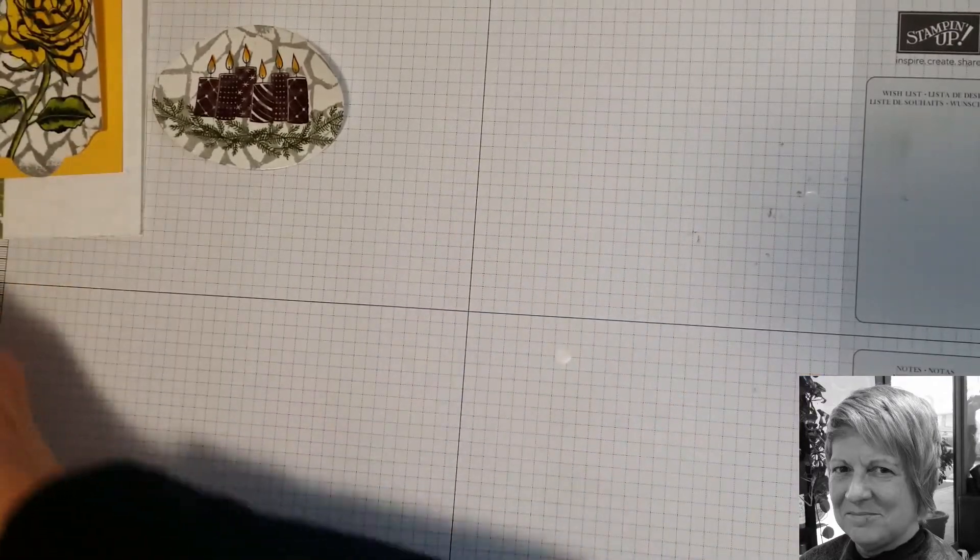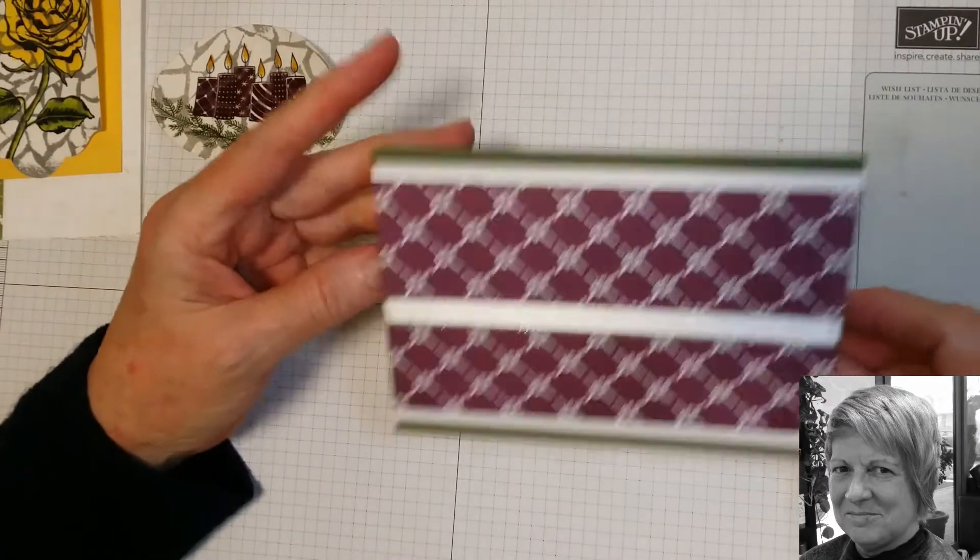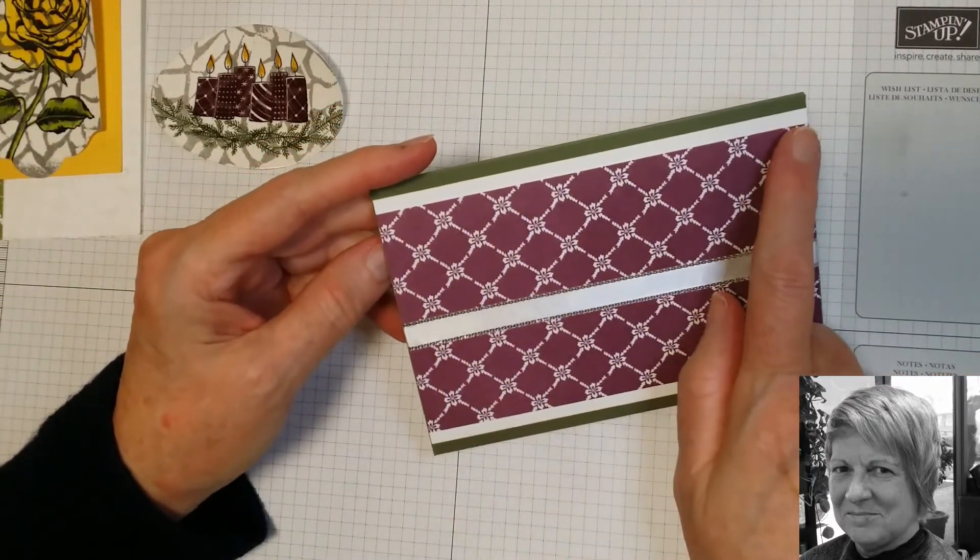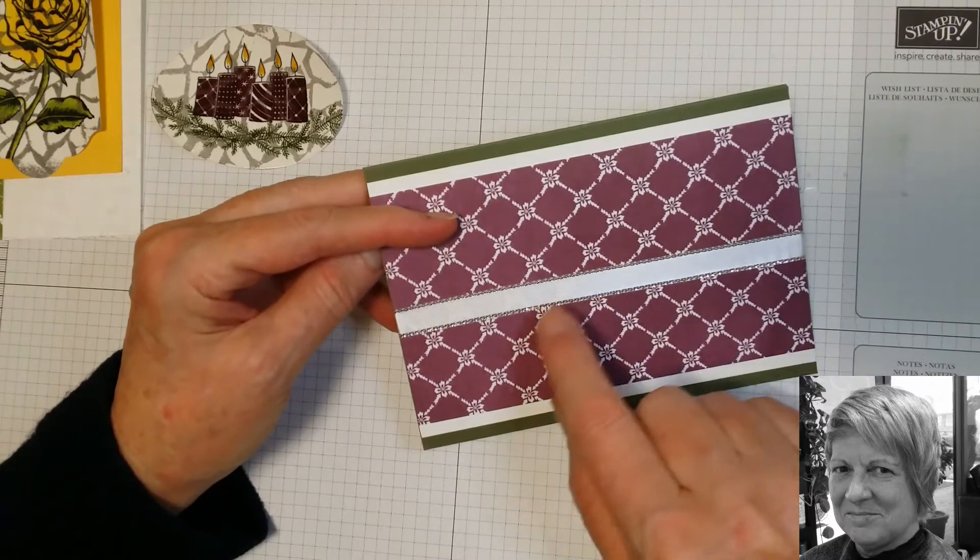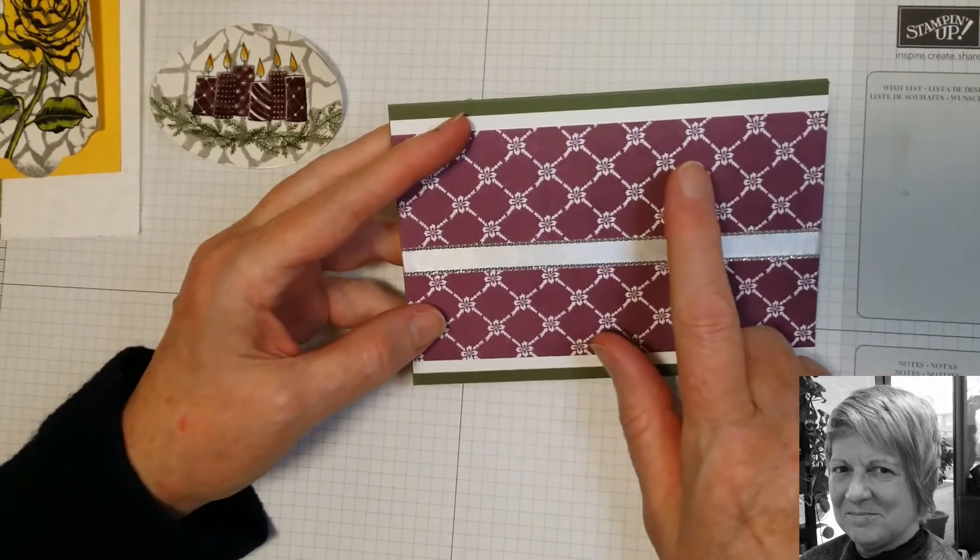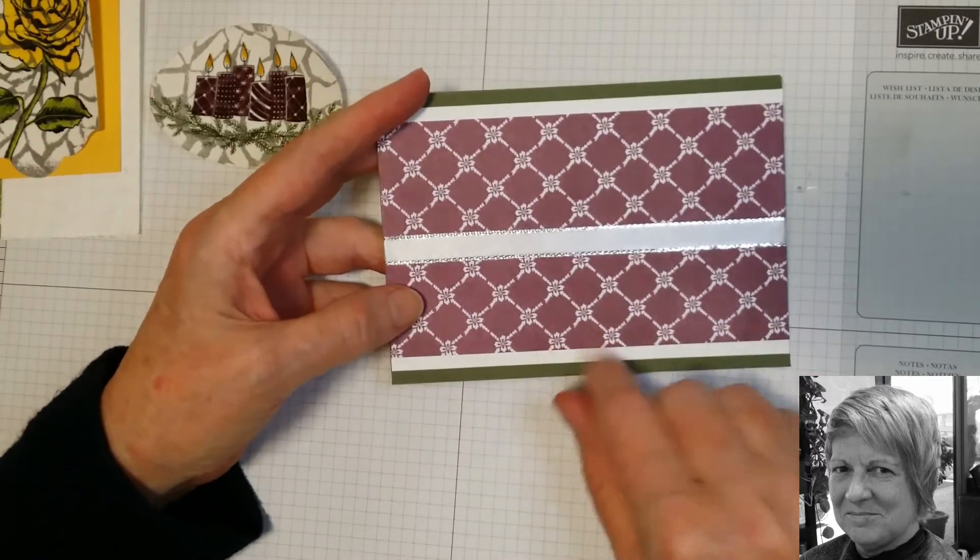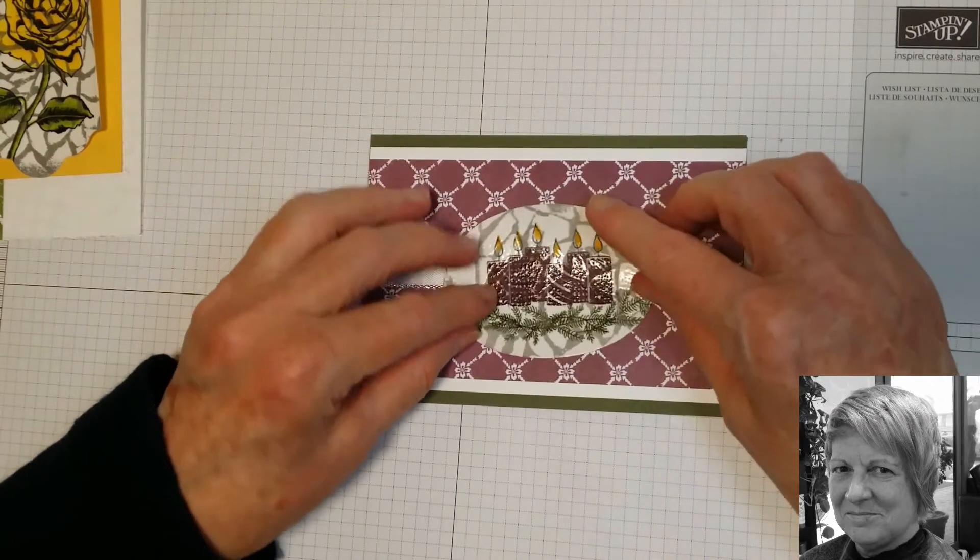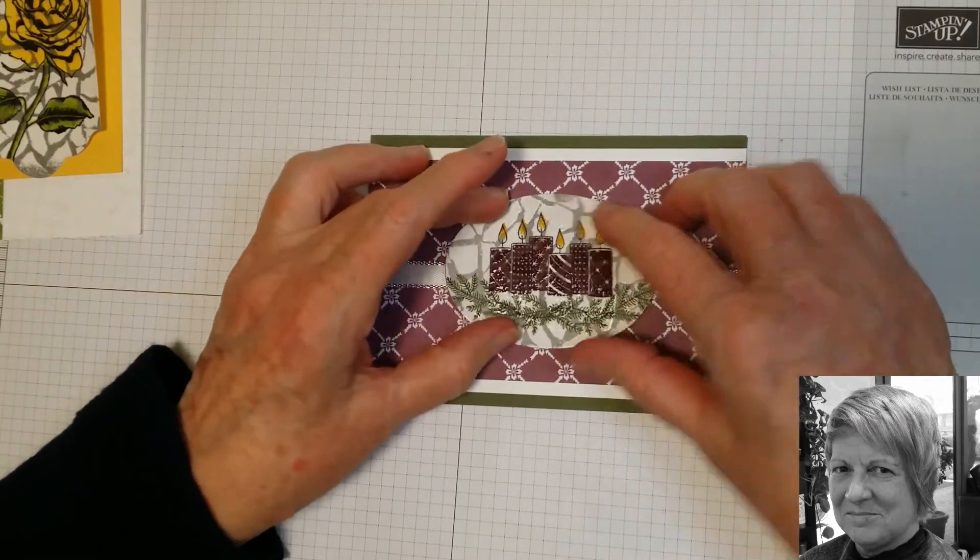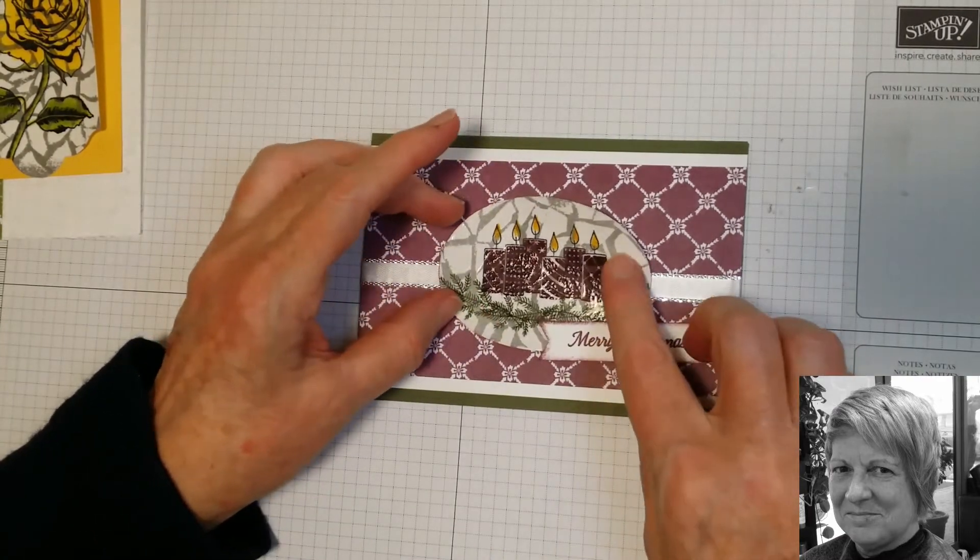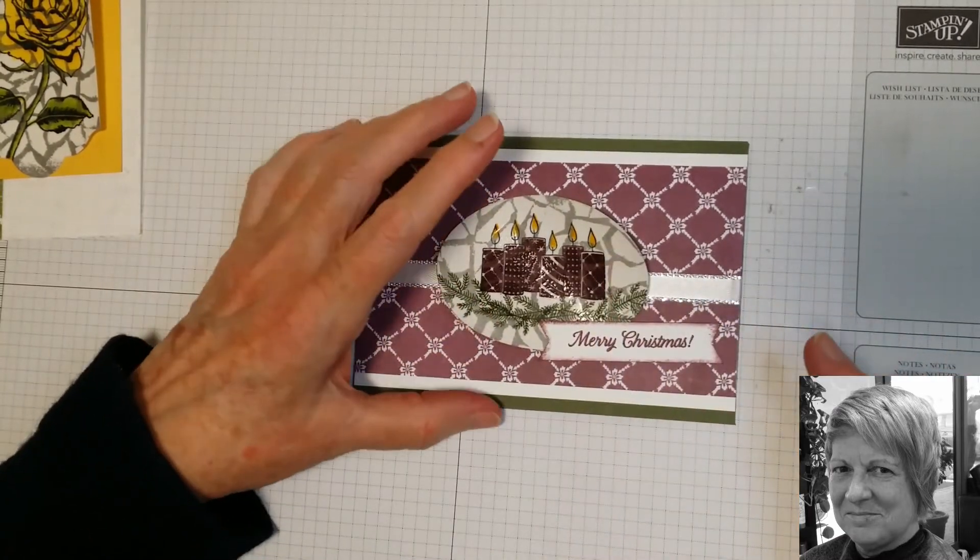For the candles one, I have got a piece of Always Artichoke cardstock, some Whisper White cardstock, some of the Fresh Fig designer paper, and some of the silver metallic edge ribbon. Again, I'm just going to put that here and the Merry Christmas there, and that will be another finished card again on my blog.